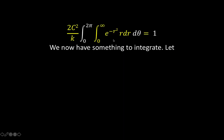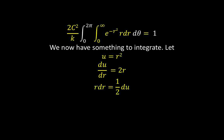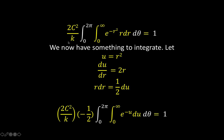We now have this integral in polar coordinates, which we know how to integrate. Let u equal r squared. It follows that du over dr equals 2r, and r dr equals one-half du. Using u-substitution again, this integral is replaced by one where e raised to negative r squared r dr d theta becomes e raised to negative u du d theta. Since r dr equals one-half du, we factor out the one-half outside the integral, giving a constant of negative one-half with the negative sign. All the rest are just copied.